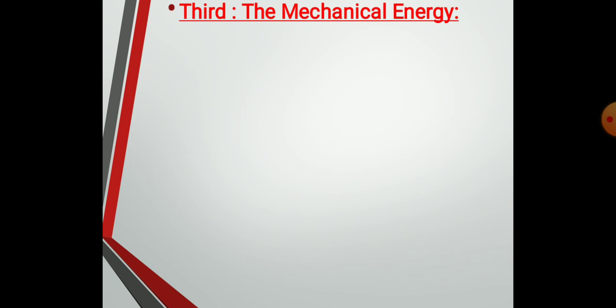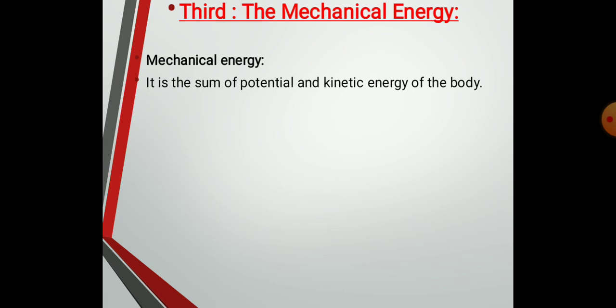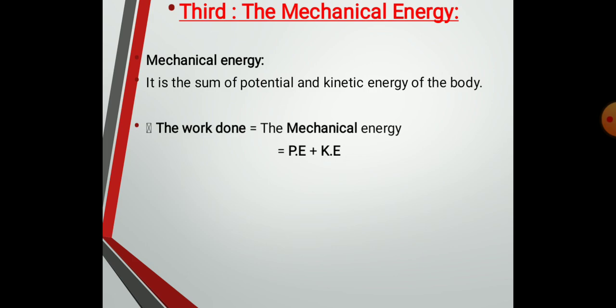Now we're going to talk about mechanical energy. When you lift an object, you do work that is stored in the object in the form of potential energy. When the object falls down, the stored potential energy is changed gradually into kinetic energy. The sum of potential energy and kinetic energy of an object is known as mechanical energy. The work done equals the mechanical energy — in any problem, you can see work done instead of mechanical energy, as both yield the mechanical energy. Mechanical energy equals potential energy plus kinetic energy.